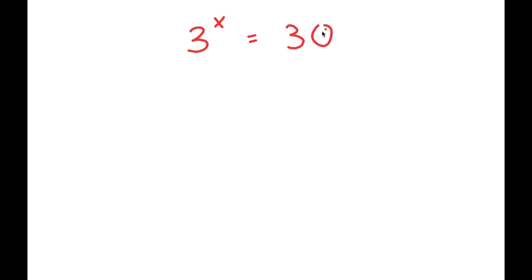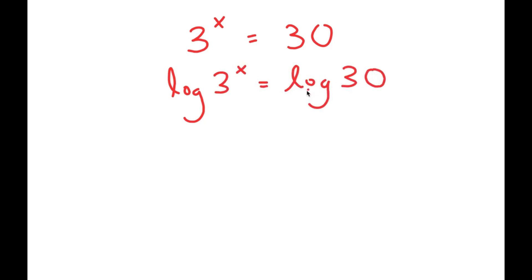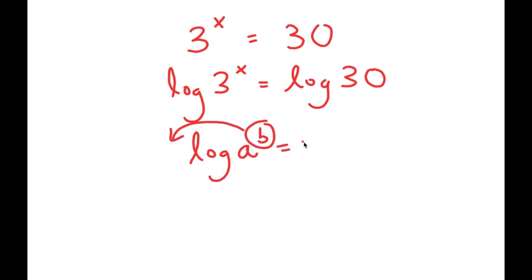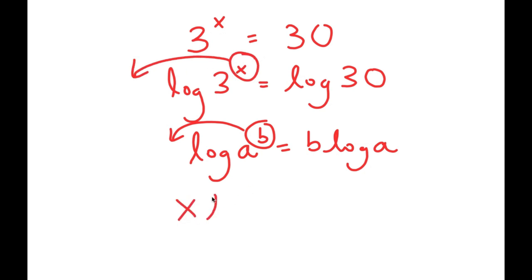In this video, I'm going to solve the equation 3 to the power of x is equal to 30. To solve this, I start by taking the log on both sides, giving log of 3^x equals log of 30. If I have log a to the power of b, I can move b to the front, turning it into b times log a. So I get x times log 3 equals log 30.